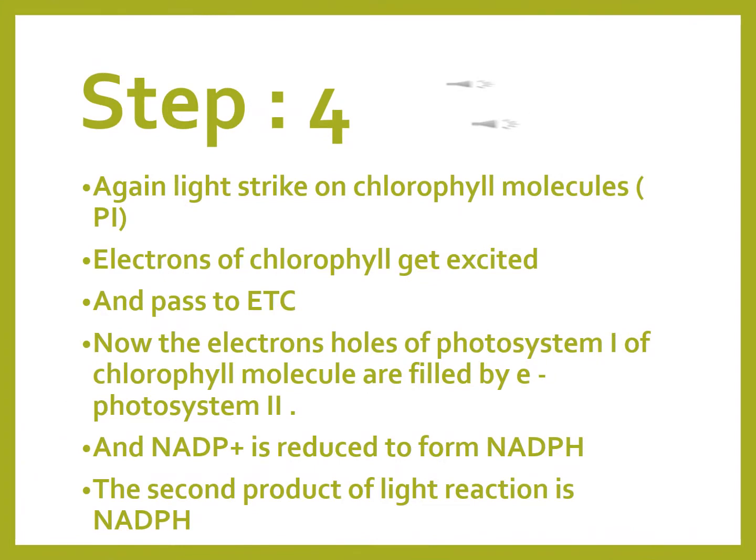Now again, light strikes on the chlorophyll molecule of photosystem 1, then electrons of chlorophyll get excited. The excited electrons pass to the electron transport chain. The electron holes of photosystem 1's chlorophyll molecule are filled by electrons from photosystem 2, because there is no lysis of water occurring here. NADP is then reduced to form NADPH — these electrons combine with protons and with NADP to form NADPH.